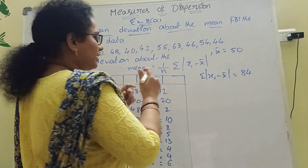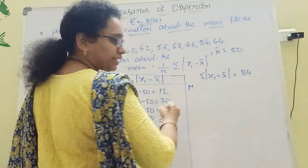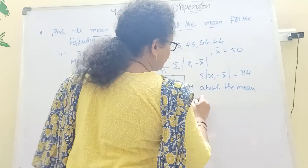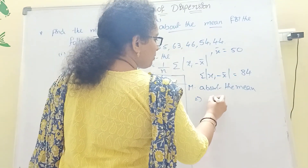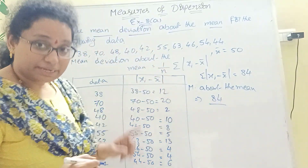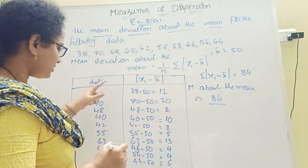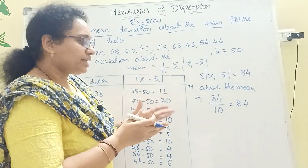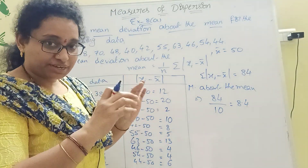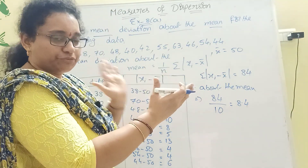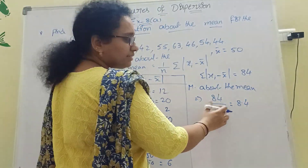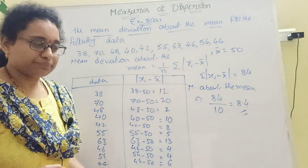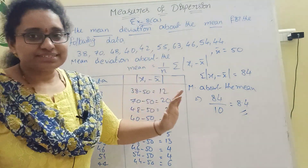Now applying the formula: Mean Deviation about the Mean = Σ|xi − X̄| / n = 84 / 10 = 8.4. When dividing by 10, shift the decimal one place left. So the mean deviation for this ungrouped data is 8.4. Now we move to grouped data.